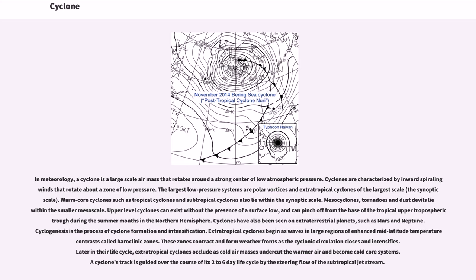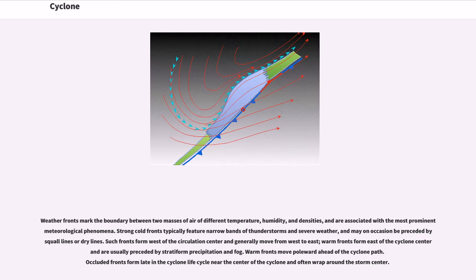Extratropical cyclones begin as waves in large regions of enhanced mid-latitude temperature contrasts called baroclinic zones. These zones contract and form weather fronts as the cyclonic circulation closes and intensifies. Later in their life cycle, extratropical cyclones occlude as cold air masses undercut the warmer air and become cold core systems. A cyclone's track is guided over the course of its two- to six-day life cycle by the steering flow of the subtropical jet stream. Weather fronts mark the boundary between two masses of air of different temperature, humidity, and densities, and are associated with the most prominent meteorological phenomena.